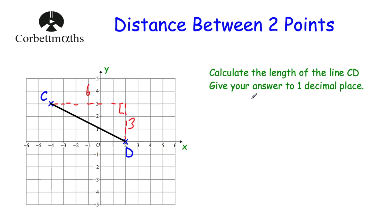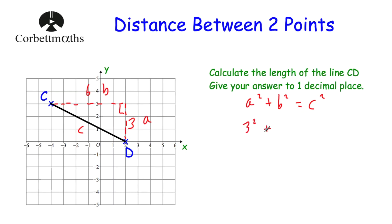And now we want to use Pythagoras's theorem: a² + b² = c². Let's label our sides — a and b are the two shorter sides, and c is the hypotenuse, the longer side. So let's label the longer side c — that's the one opposite the right angle — and the two shorter sides would be a and b. Now let's replace a, b and c with the values. So instead of a squared, we're going to write 3 squared, plus, instead of b squared, we're going to write 6 squared, and that equals c squared — that's the length for the line CD.